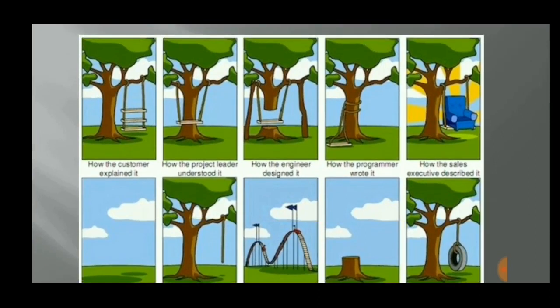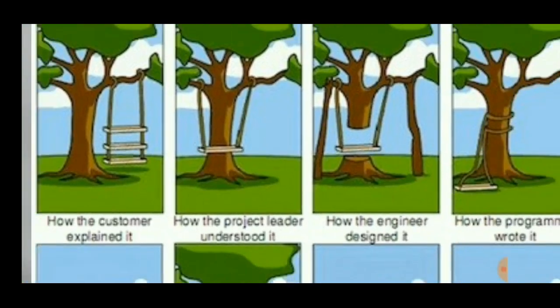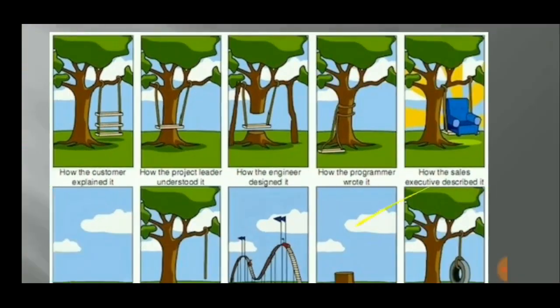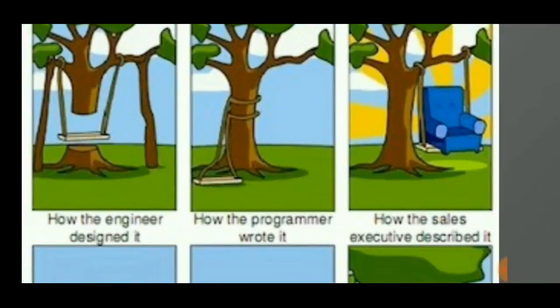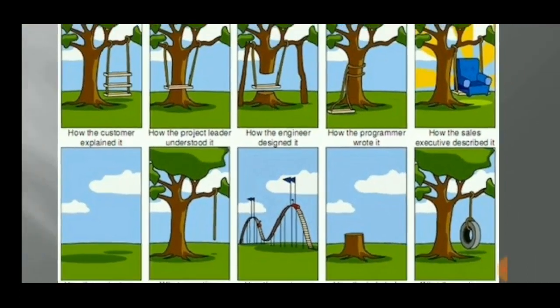Another interesting example: if you want a swing, you might think of tying a flat plank to a branch with rope. A perfect swing is simply that — it is comfortable to sit on a flat surface. It is not necessary to bring a sofa or complex structure for a swing. These examples illustrate the difference between wrong design and good design.